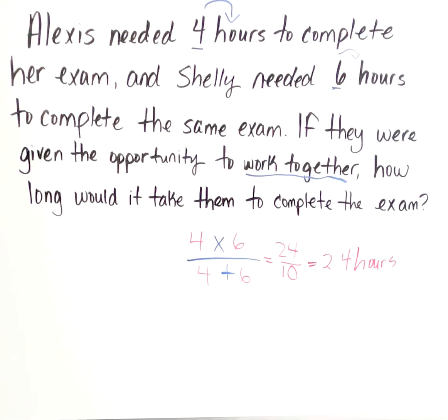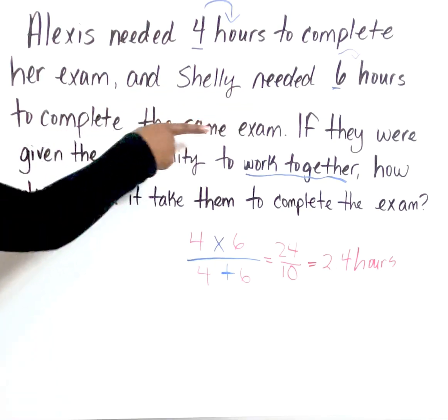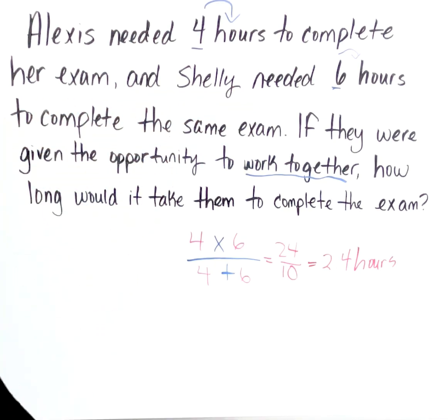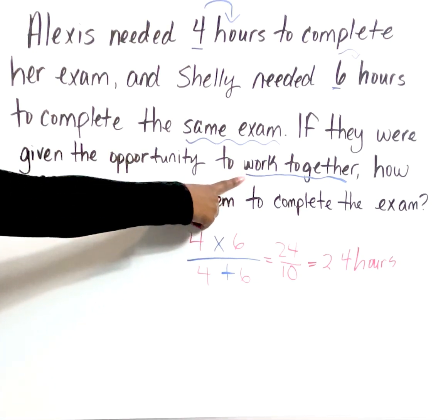Looking at the question again from the top: Alexis needed four hours to complete her exam, and Shelly needed six hours to complete the same exam. That's another trigger - they're doing the same exact thing. If they were given the opportunity to work together, how long would it take them? Your trigger is: work together.